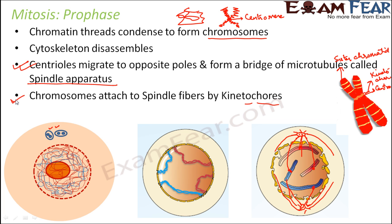So a lot of things happen in prophase: chromatin threads condense to form chromosomes; the cytoskeleton disassembles and its microtubules form spindle apparatus; chromosomes attach to the spindle apparatus by kinetochores; and the nuclear envelope starts breaking down and finally vanishes. All these structures — kinetochores, microtubules — are made of proteins, which is why protein synthesis takes place in the G2 phase before division begins.